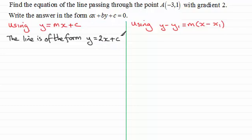And we've got to work out what c is. And to do that, we know that this point must satisfy this equation, because it's a point that lies on the line. So if that's the case, we can say that when x equals minus 3, y equals 1.